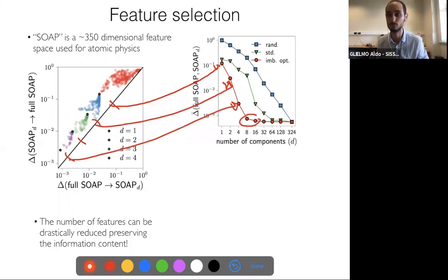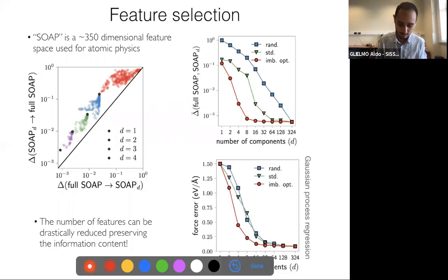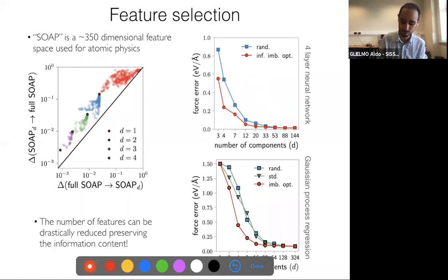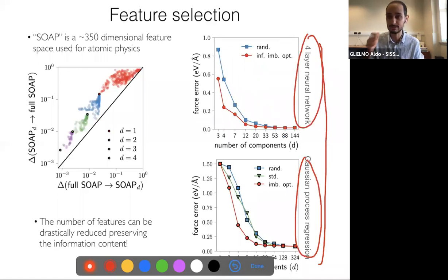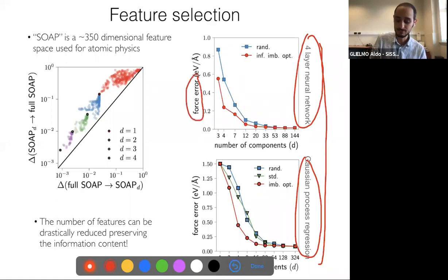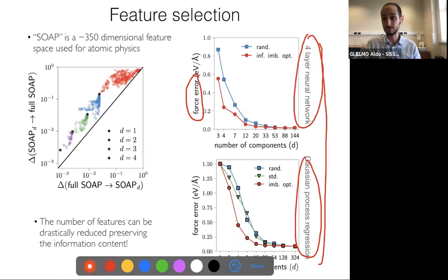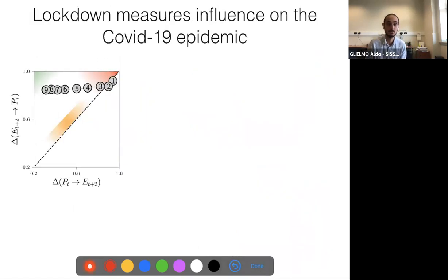Doing this, the process converges very rapidly. With only 8 or 16 components you can achieve a good resolution of the first neighbors of your 350-dimensional space. You can then run supervised learning algorithms — a Gaussian process or a neural network — on the selected features and achieve much faster convergence in terms of test error, showing that this feature selection scheme works for supervised learning tasks.